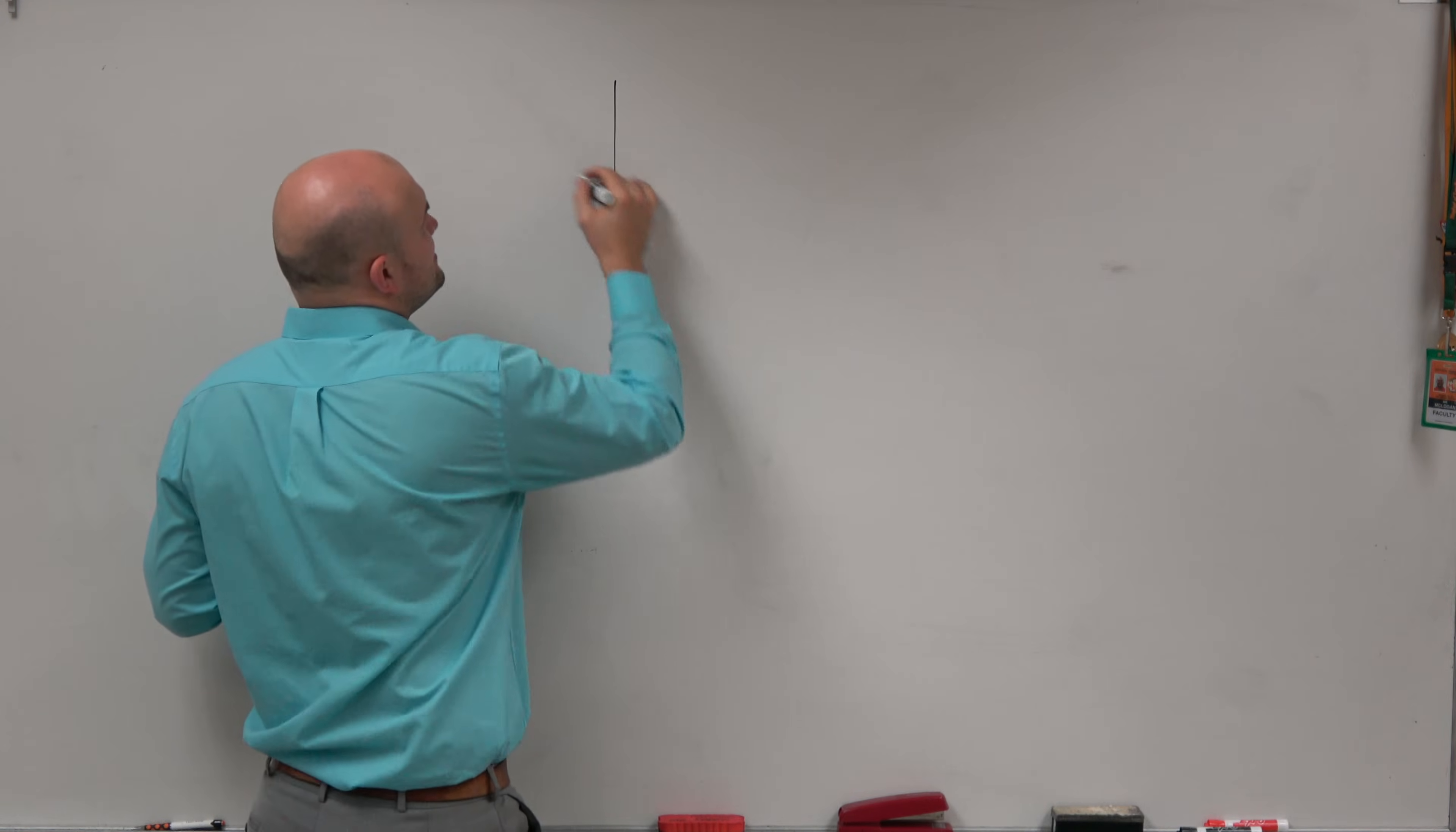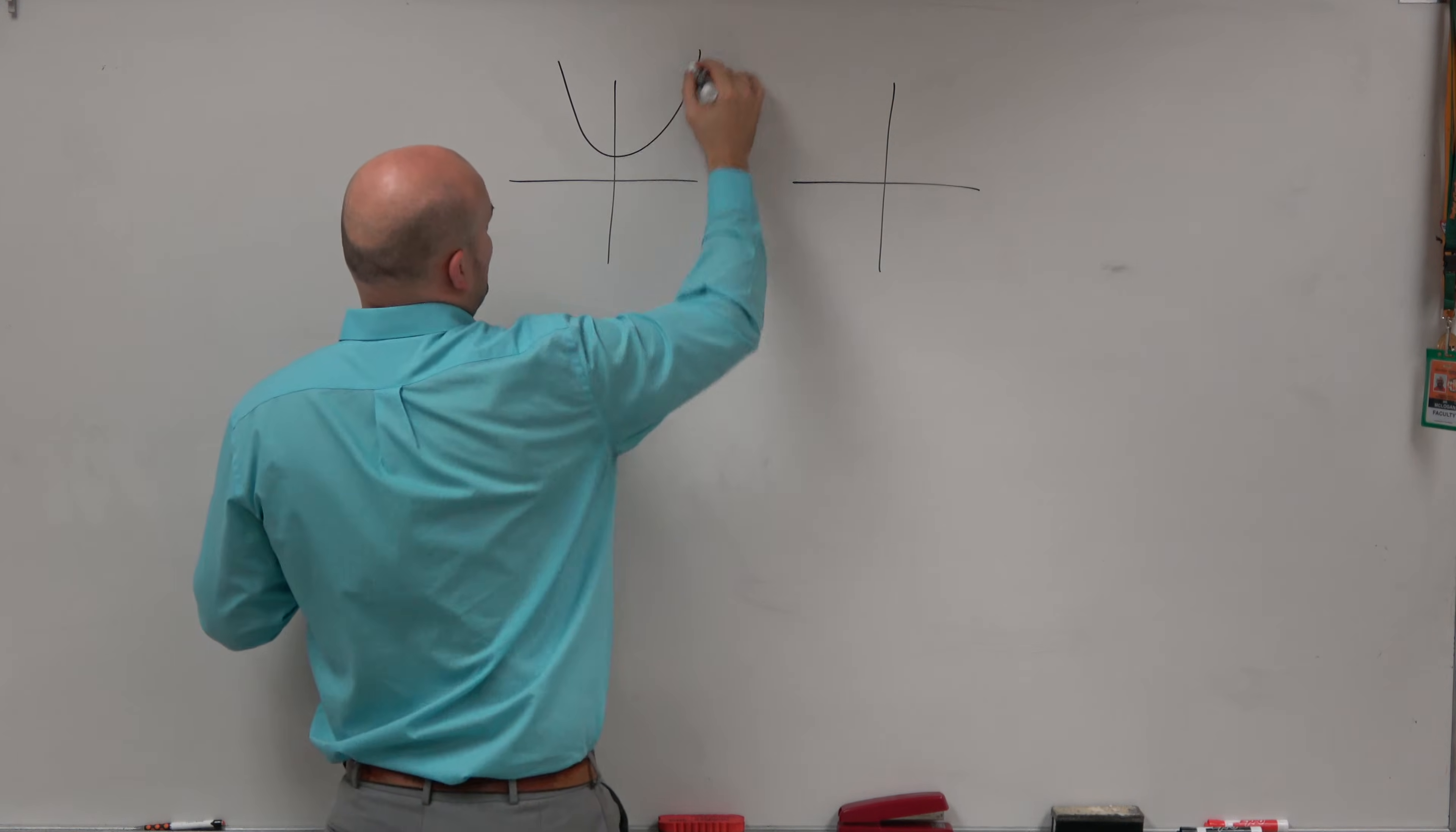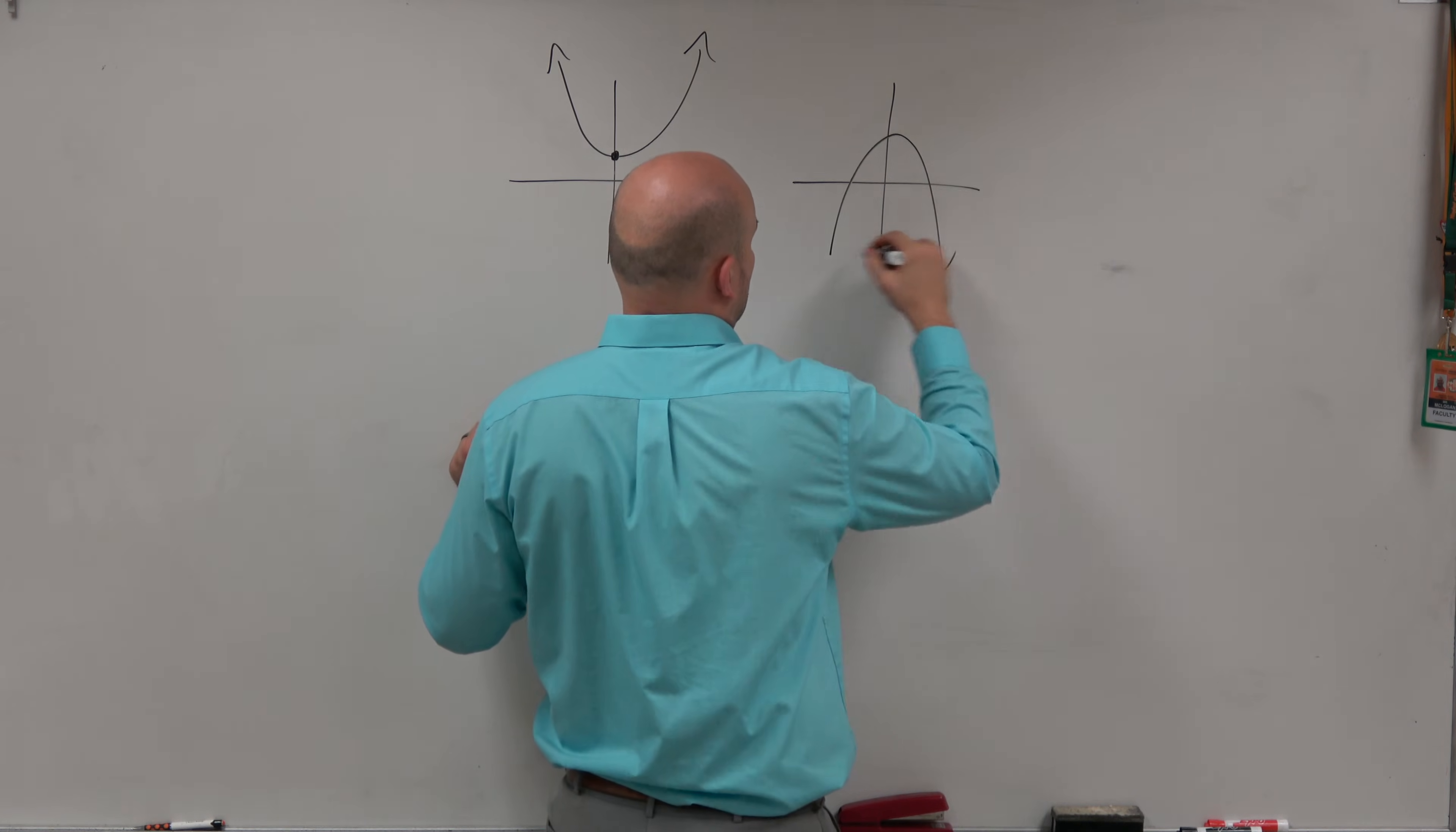So let's look at our famous graph, the quadratic. And if we look at a positive quadratic graph here, let's say its vertex there, and then this one has vertex over there.